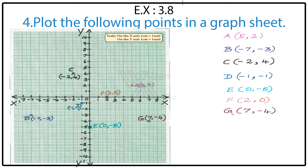Point G: (7, -4). The X coordinate is 7, so count from the origin to 7 on the X axis. The Y coordinate is minus 4, so come down. From 7 go down, and from minus 4 go to the right. Where both points meet, that is Point G at (7, -4).